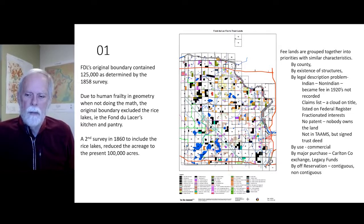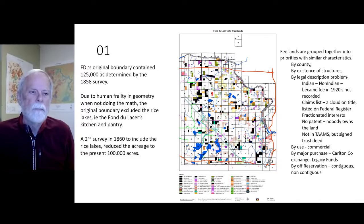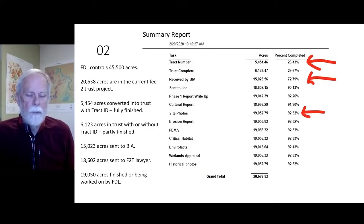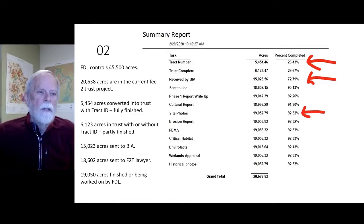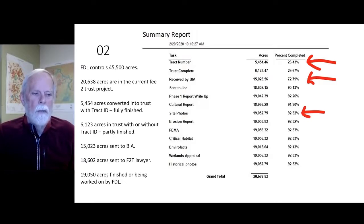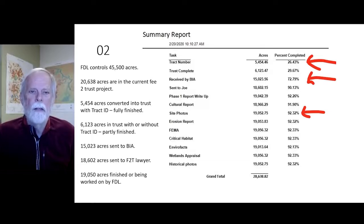Land is also grouped by use — whether commercial, residential, or woodland — by major purchase such as Carlton County exchange or legacy funds, or by off-reservation status: is it contiguous to the reservation boundary or not? Fond du Lac controls 45,500 acres, 20,000 of which are in the current fee-to-trust project. About 5,500 acres have been converted to trust status and are fully finished, as seen in the summary report.